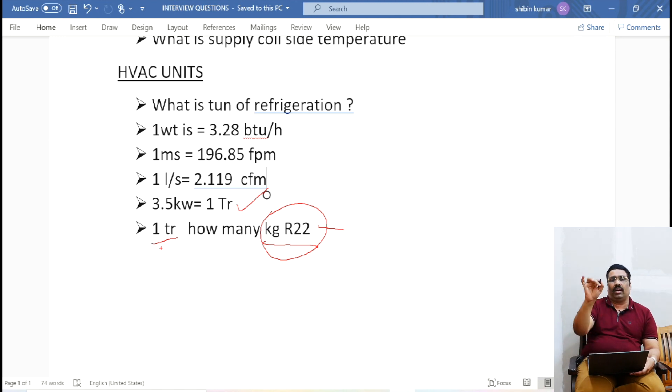If somebody asks you one TR AC, how many kg of R22 you need to fill - this is important - it's 1.2 kg. 1.2 kg refrigerant liquid R22 you need to fill inside that one TR AC. Very important, right? Nice information. Thank you so much for watching this video.